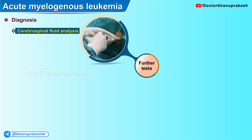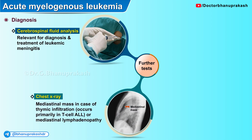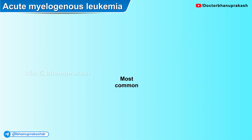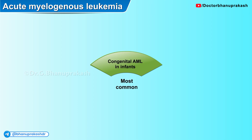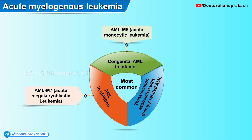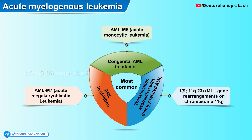For further tests, cerebrospinal fluid analysis is relevant for diagnosis and treatment of leukemic meningitis. A chest X-ray can show mediastinal mass in cases of thymic infiltration, which occurs primarily in the T-cell variant of acute lymphoblastic leukemia; in rare cases of AML this can also be positive. An abdominal ultrasound can show organ enlargement, especially of the liver and spleen. The most common congenital AML in infants is the M5 variant (acute monocytic leukemia). The most common AML in children is M7 (acute megakaryoblastic leukemia), especially in those with Down syndrome. The most common translocation associated with therapy-related AML is t(9;11), resulting in MLL gene rearrangement on chromosome 11.